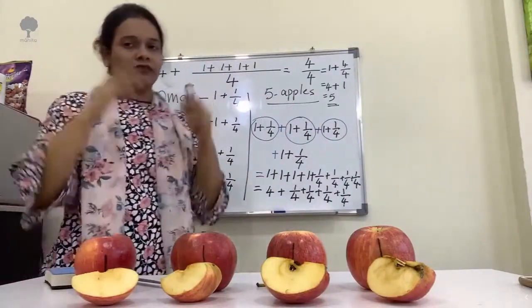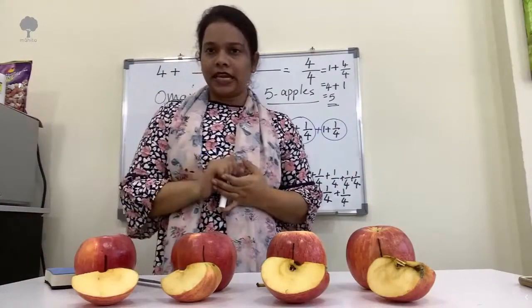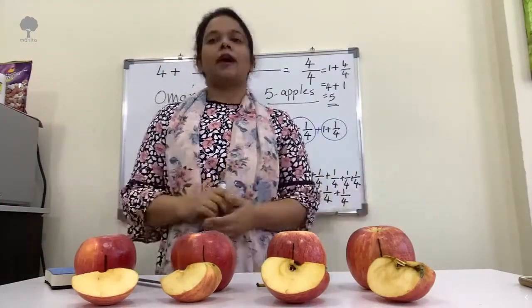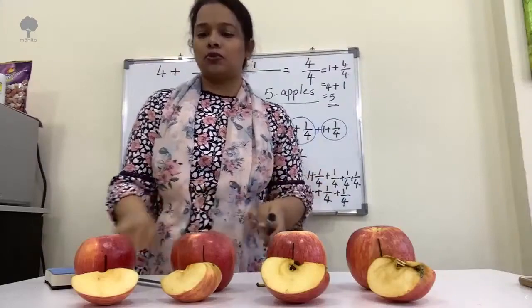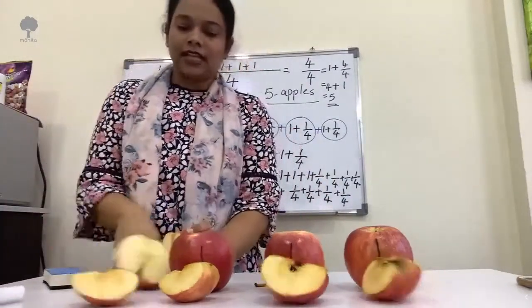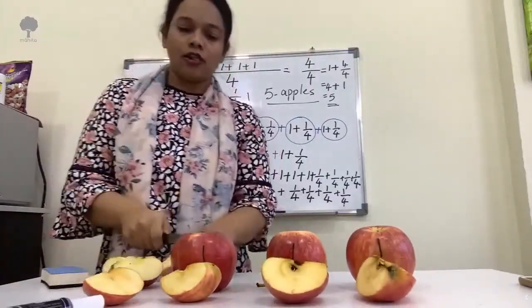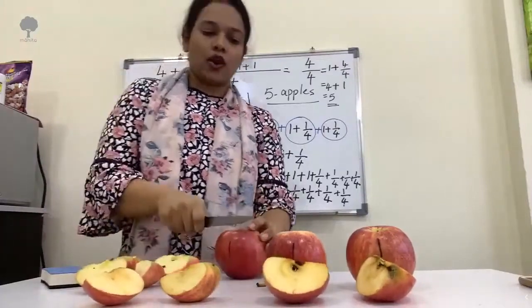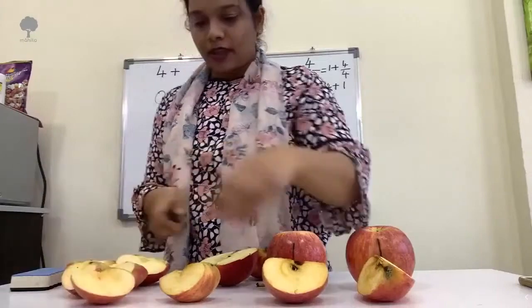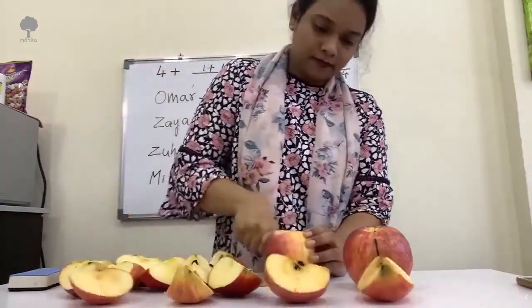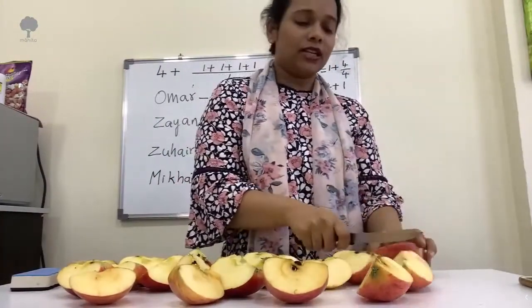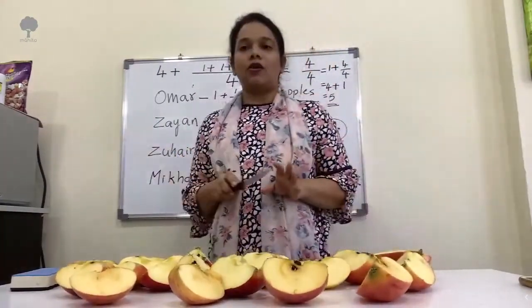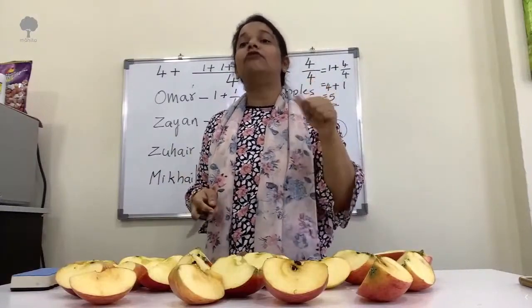But Zuhair always gets different ideas. He was not satisfied with this kind of distribution. He said this is not going to work — he is not interested in having it like this. He wants all the apples to be cut. So he asked everyone to cut all the apples into quarters. Now I have so many fractions of one-fourth, one-fourth, one-fourth, one-fourth, one-fourth — all the apples together cut into one-fourths.